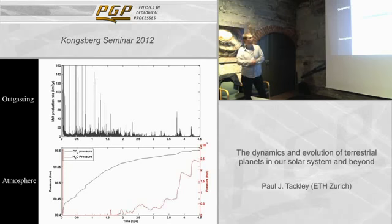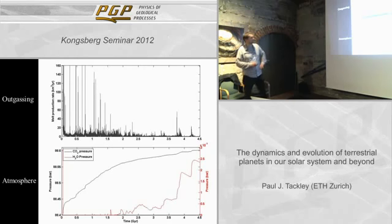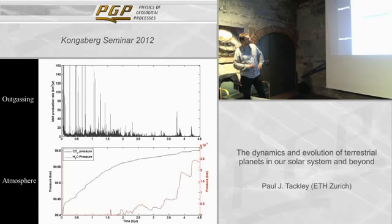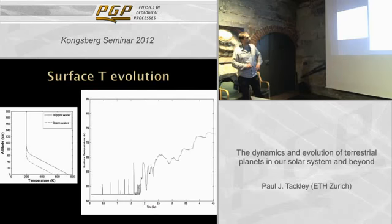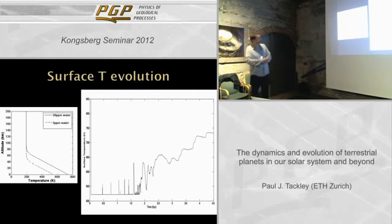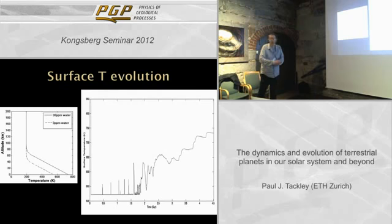Coupling this to the episodic calculations: outgassing occurs in spurts but the number of spurts decreases with time. Looking at the partial pressures of carbon dioxide and water — carbon dioxide doesn't change very much, but the water does make a difference. Venus is very dry but does have about 30 ppm of water in the atmosphere, and this is apparently enough to make a large difference to the surface temperature. The difference between having 3 ppm and 30 ppm of water is about 200 Kelvin of surface temperature.